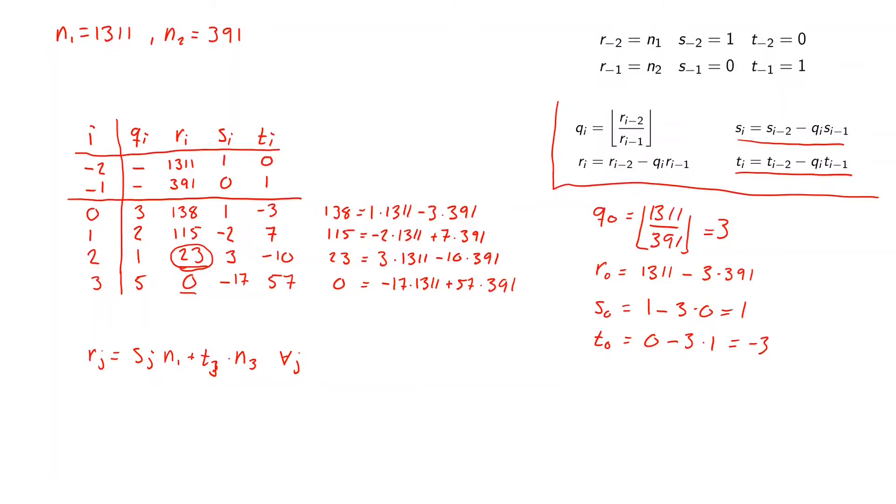And the actual expression that we are looking for in Bézout's identity is this expression that we have here. So we can now write the GCD of 1311 and 391 equals 23, which also equals 3 times 1311 minus 10 times 391. And the 3 here is our s and the minus 10 here is our t.